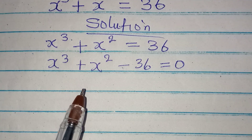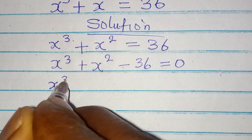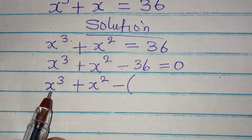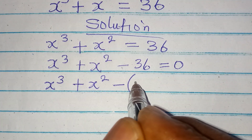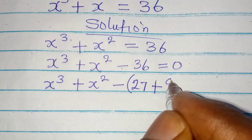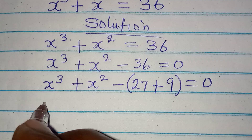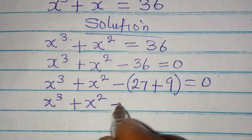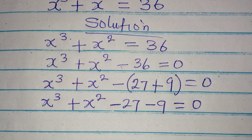What we'll do is try to split this 36 into two parts so that we can group and factorize. So I'm going to write x to the power of 3 plus x to the power of 2, then open a bracket. Since I have x to the power of 3, I'll pick a number from 36 that can be written to the power of 3 — that number is 27. Then 36 minus 27 gives 9. So we now have negative 27 and negative 9, and this equals 0.